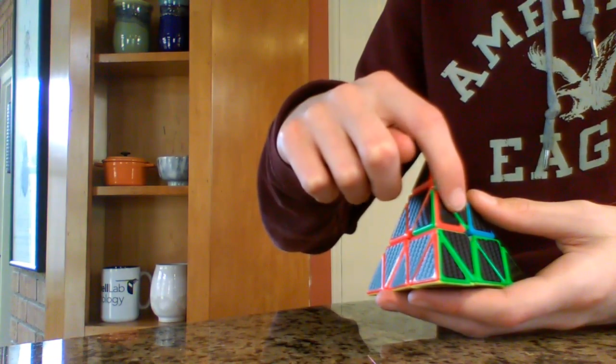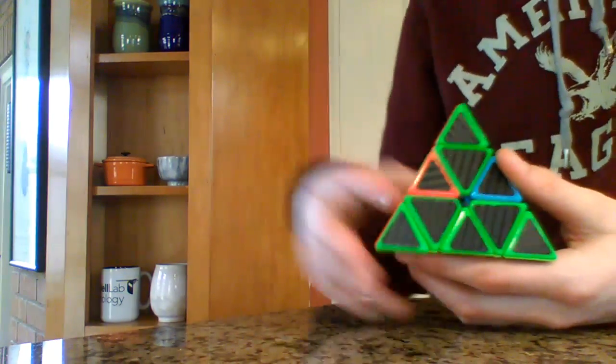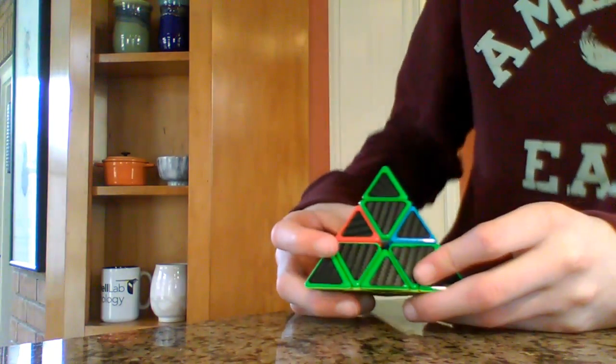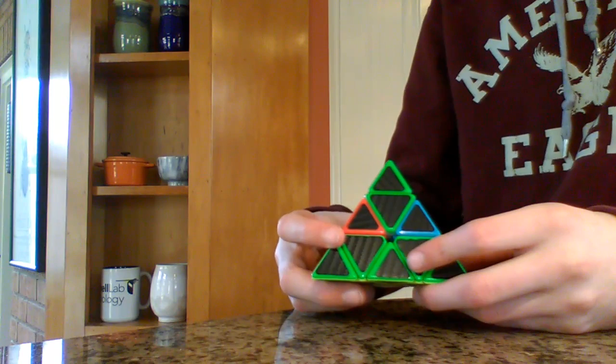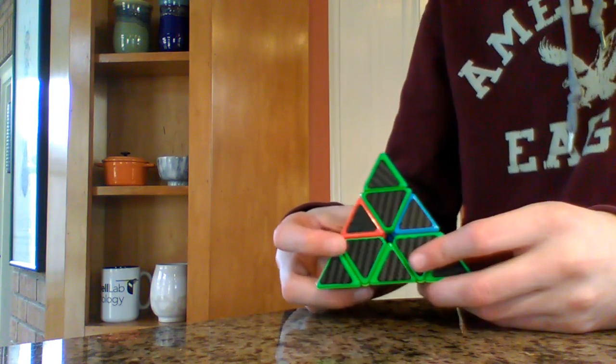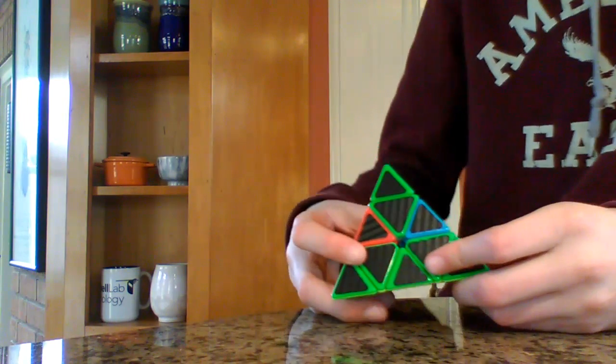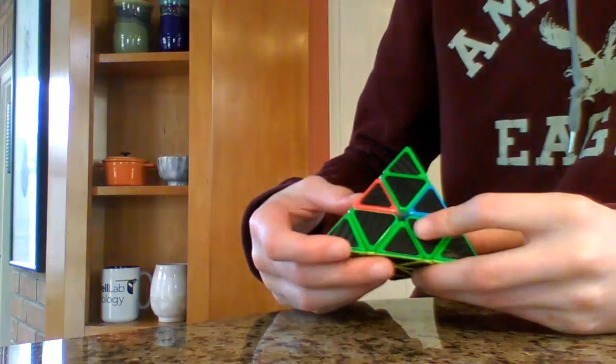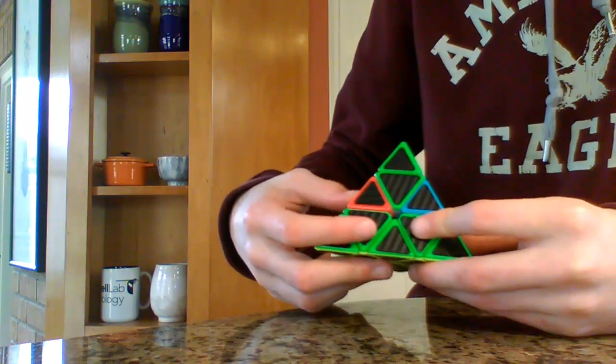To do that, we're going to do an algorithm. This is the final algorithm you'll need because after this, you'll be done. The algorithm is: left down, right down, left up, right up. Now hold the top of the Pyraminx and move it down like that.